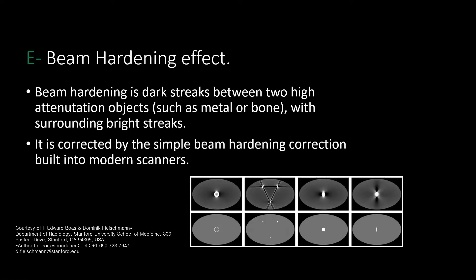Number five is beam hardening effect, which is a very important artifact to know about. I can't tell you how many implants have been falsely extracted because people don't know about beam hardening. In essence, beam hardening occurs when we have a very dense object in the CBCT — you will find dark streaks or dark lines around this dense object. This is the beam hardening effect, as you can see in the images shown here.